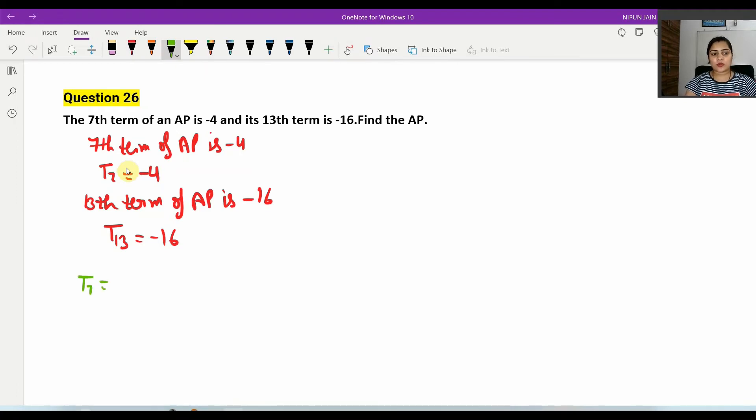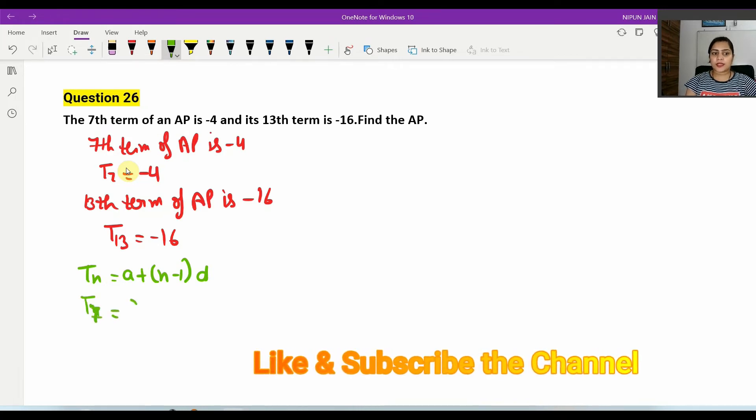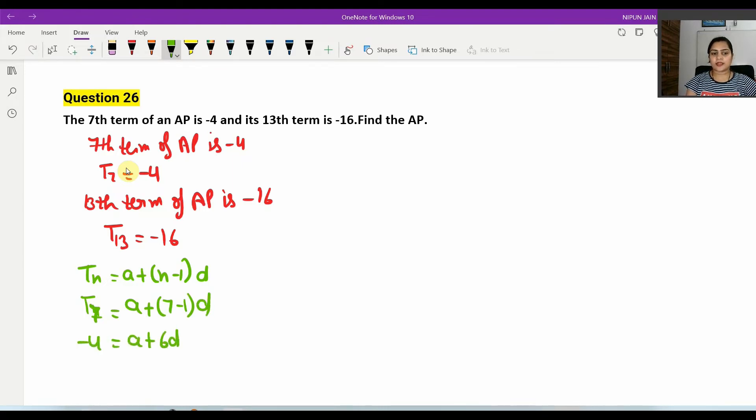Here we are using our formula. First of all, Tn equals a plus (n minus 1) times d. So T7 equals a plus (7 minus 1) times d. The T7 value is minus 4, so minus 4 equals a plus 6d.